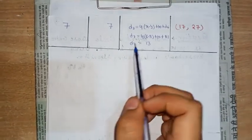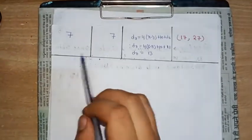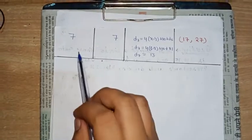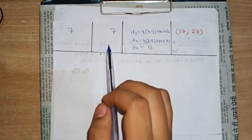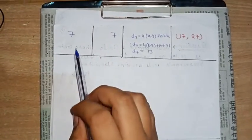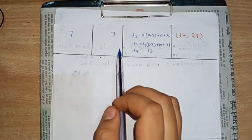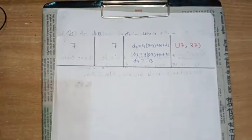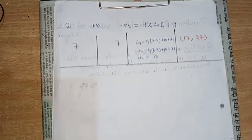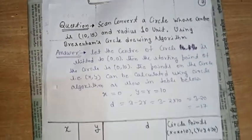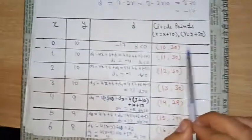When the values of x and y become the same, we stop the algorithm. Now we need to draw the points using the h and k values we took earlier, using Capital X = x + h and Capital Y = y + k.